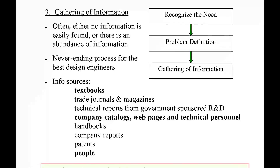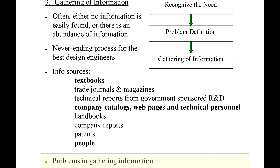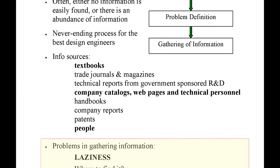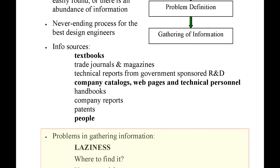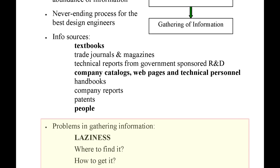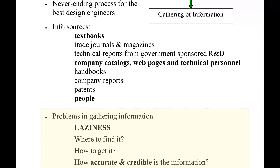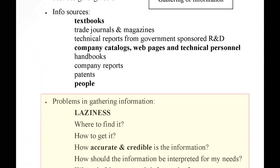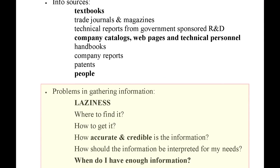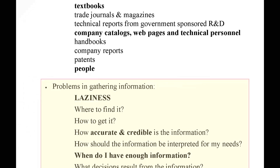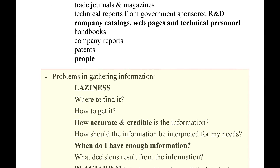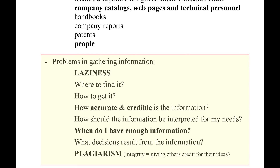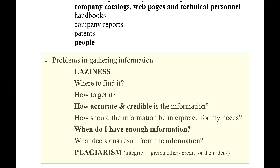Let's discuss some common problems when gathering information. The first problem is laziness, and this is one that plagues all of us. Due to how powerful the internet is for information gathering, if a keyword search doesn't return the answer as one of the top hits, it's easy to conclude the information doesn't exist. We have to summon the discipline to push beyond that and realize there are many other ways to find information as discussed earlier in this section.